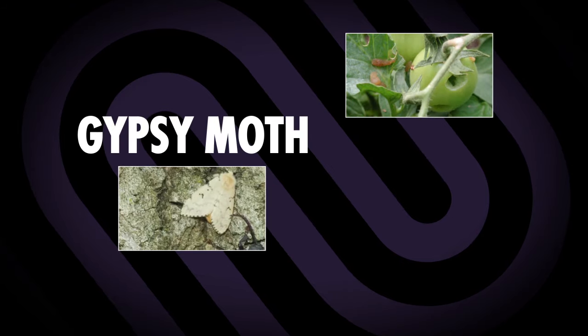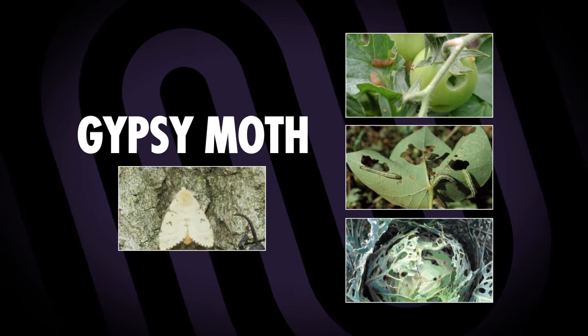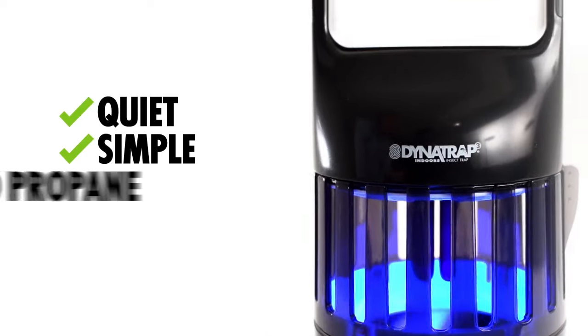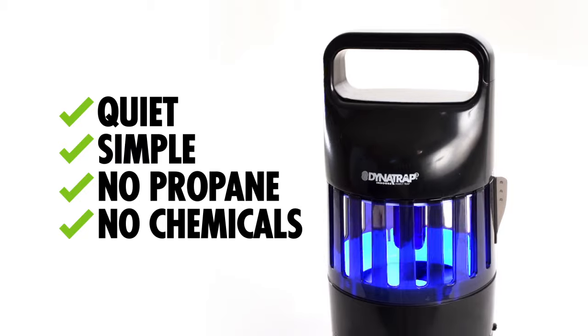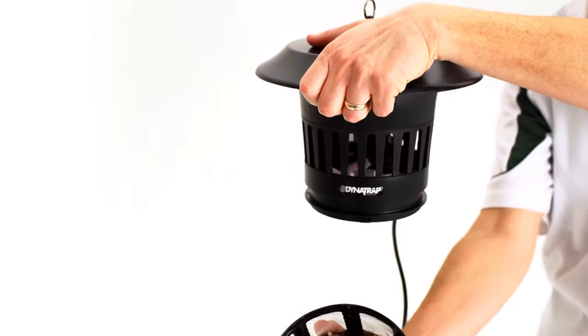Moths in the caterpillar stage of development can eat and destroy trees, plants, and vegetables in your garden. Dynatrap operates quietly and simply, without requiring propane or chemicals. Simply plug it in and turn it on. You won't even know it's at work until you begin to see the results.